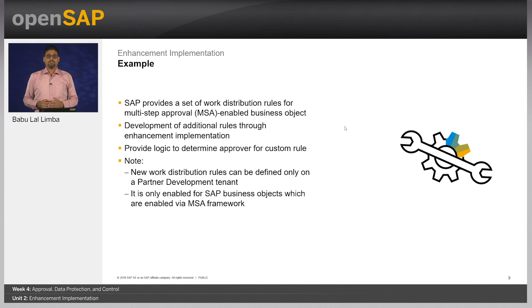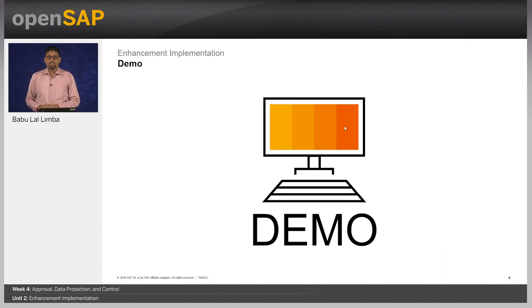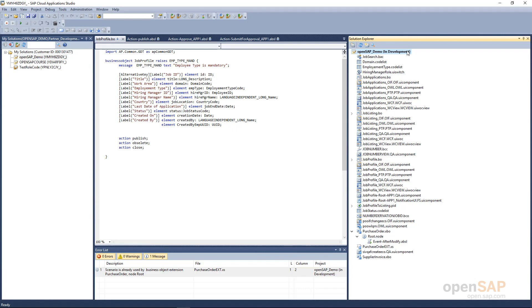Note that this example of providing additional rules can be developed only in a partner development tenant, since it requires development of BC sets based on SAP business configuration objects. We have highlighted this in the business configuration unit as well. Let us move on to the system now and see how this can be achieved. I will take the example of a purchase order and create an additional approval work distribution rule for it.